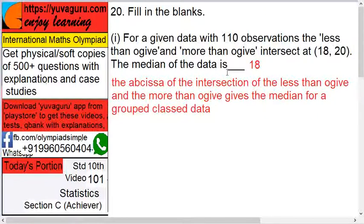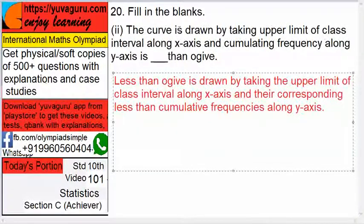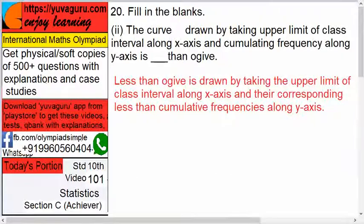Next, the curve is drawn by taking upper limit of the class interval along x-axis and cumulative frequency along the y-axis is ____ than the ogive. It should be 'curve drawn', not 'curve is drawn'.